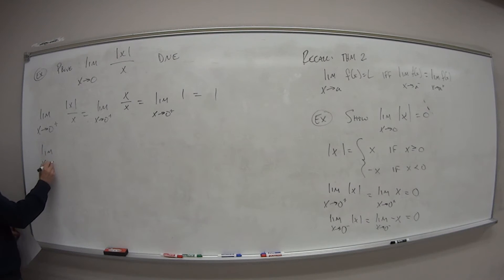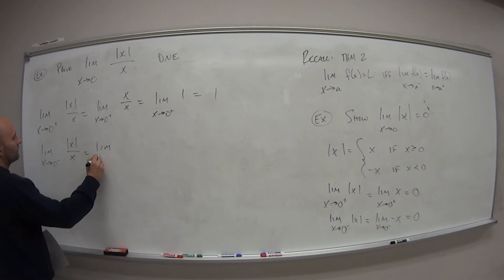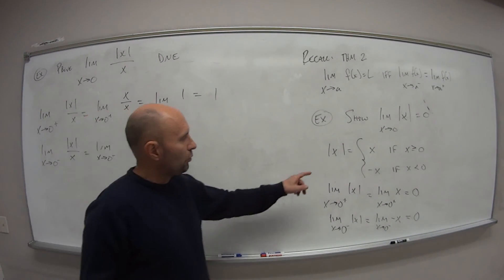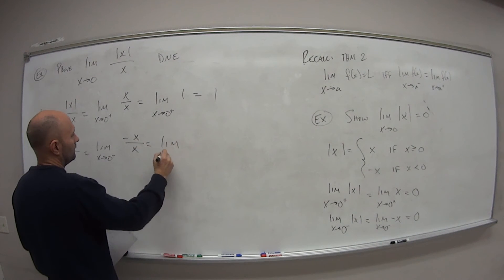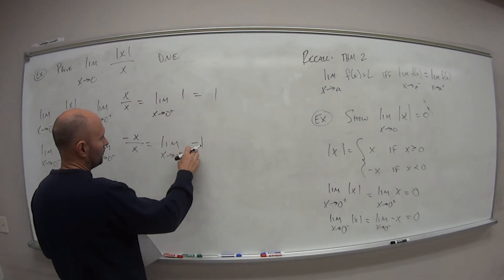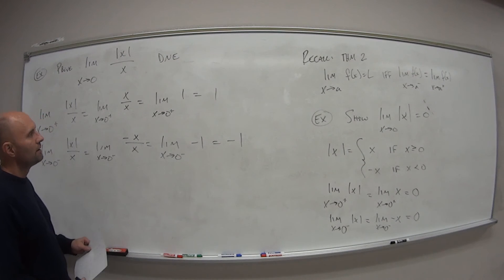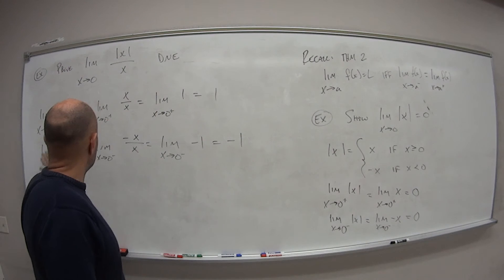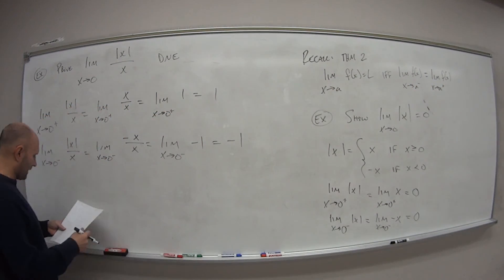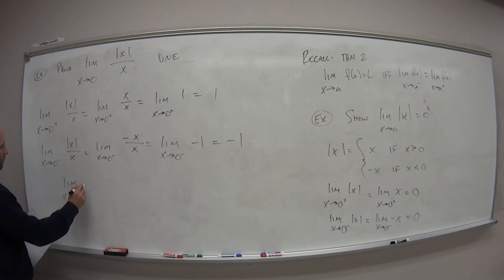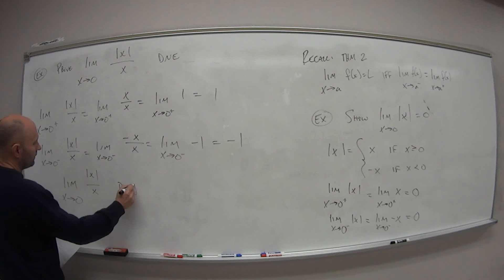Same idea, limit as x approaches 0 from the left of this function we're trying to prove doesn't have a limit is the limit as x approaches 0 from the left side. So if we're on the left side, that means what? That means it's equal to negative x. So this is like negative x over x. So this is what? The limit as x approaches 0 from the left. Negative x divided by x is just negative 1. And again, by the same idea, no matter what x is approaching, it's going to give us this value of negative 1. So as we approach from the right, we get close to 1. As we approach from the left, we get close to negative 1 because they are not equal. So if and only if, well, they're not equal. Therefore, the limit as x approaches 0 of absolute value of x over x does not exist.